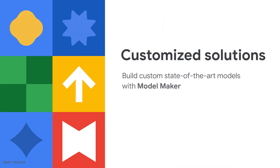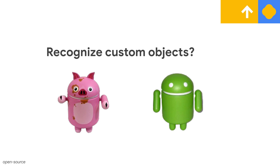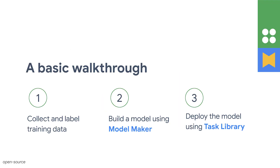Task Library allows you to add ML capabilities into your app in just a few lines of code using provided pre-trained models. However, there are many times when you may want to do something not supported by pre-trained models — that's when you need to train a custom model. ModelMaker is an easy-to-use tool for those cases. A pre-trained object detection model can recognize 80 types of objects, but it cannot recognize a specific Android figurine. There are three steps: first, collect and label the training data; then, train a custom model using ModelMaker; and finally, deploy it using Task Library.